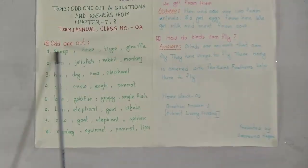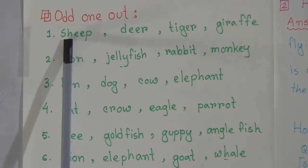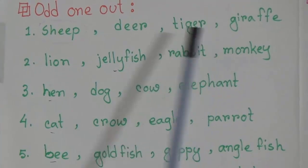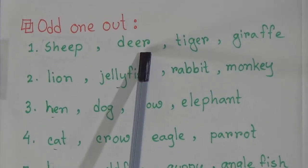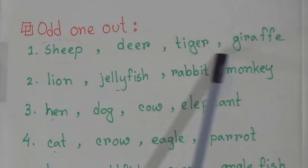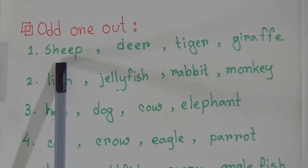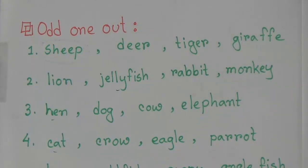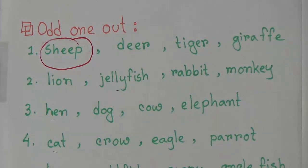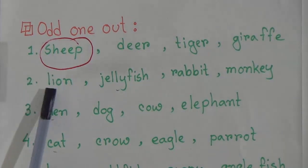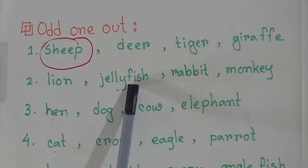Our first odd one out is: sheep, deer, tiger, giraffe. Students, here we have to find out which one does not match with the others. Sheep we use as a farm animal; deer, tiger, and giraffe are all wild animals because they live in the forest, but sheep live in our houses or farms. That means sheep is the odd one out. Now circle this one.